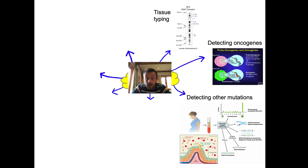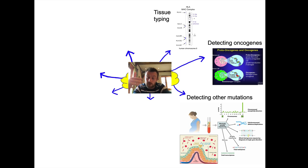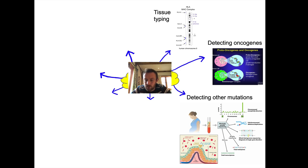We can also detect other mutations. In IVF, when an embryo is at a very small stage — around 8 to 64 cells — we can take a single cell and sequence its genes to check for mutations. A newer technology allows us to take a blood sample from a pregnant mother and use PCR to amplify specifically the fetal genes circulating at very low levels in her blood, detecting mutations including chromosomal ones like trisomy 21 — Down syndrome.